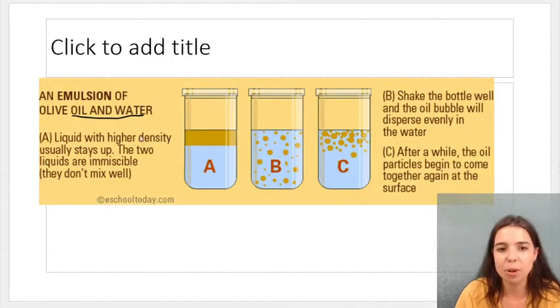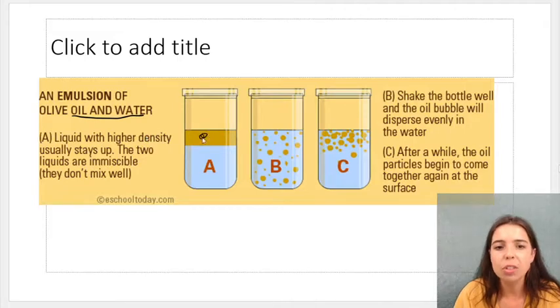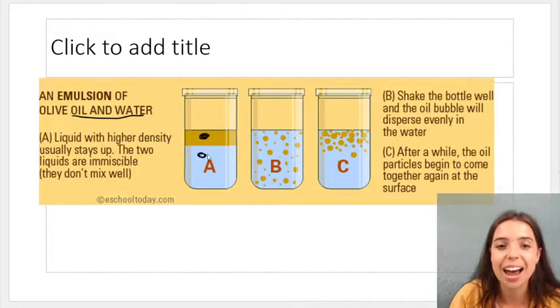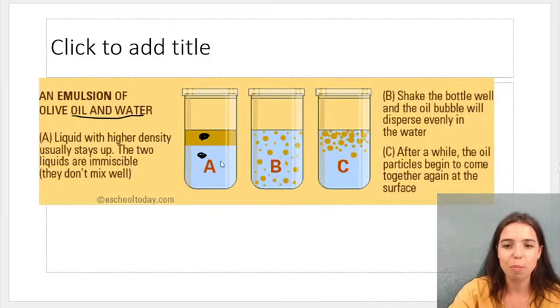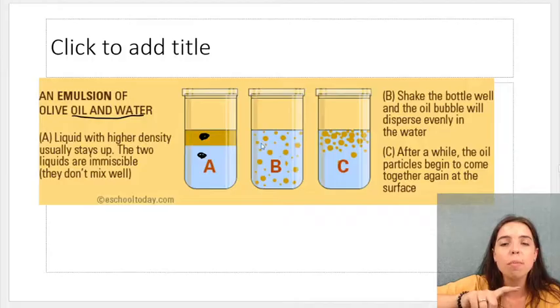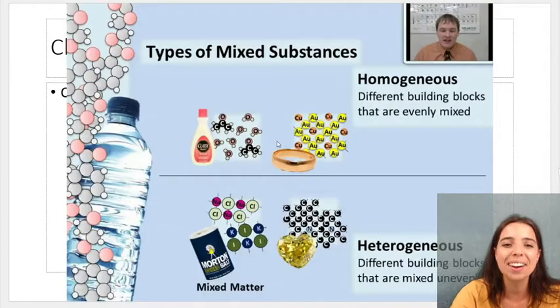In this example, we have oil and water. This forms an emulsion. So the liquid with the different density separate out the liquid. The low density liquid sits on top. If you shake it, it'll form little oil bubbles. They do not dissolve in one another.